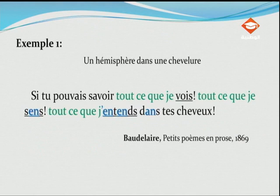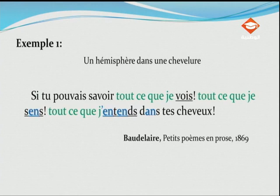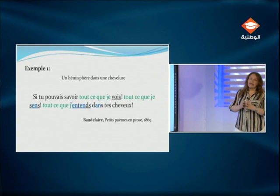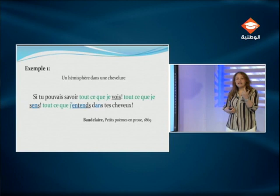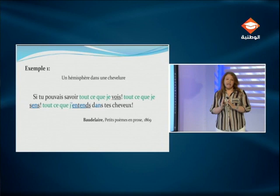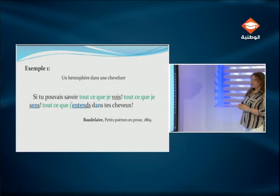La métaphore filée, l'assonance et l'allitération — tous ces procédés font de ce paragraphe de Baudelaire un véritable poème. Dans ses poèmes en prose, Baudelaire a révolutionné la poésie, innovant en se libérant des règles de la versification classique pour nous présenter des poèmes différents — mais il a gardé les images poétiques et les procédés rythmiques et prosodiques caractéristiques de la poésie.